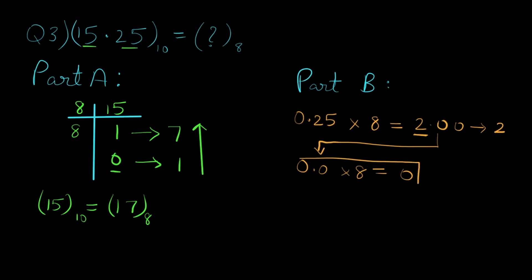So we need to stop over here as we've already got our answer, which is 2. So 0.25 in decimal is equal to 0.2 in octal. So now that we've got the answer of part A and part B, we need to club these answers to get the final answer: 15.25 in decimal is equal to 17.2 in octal.